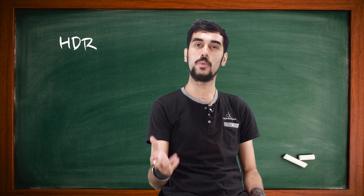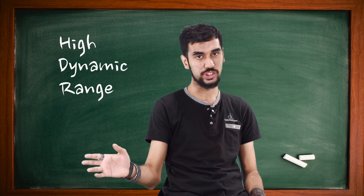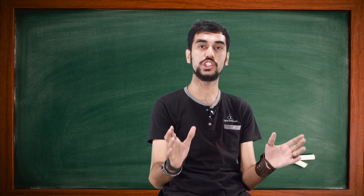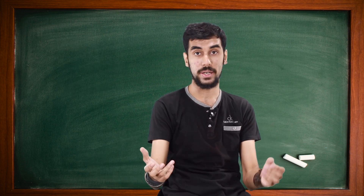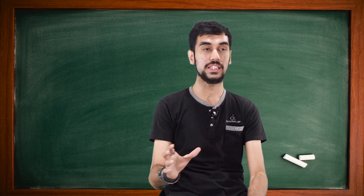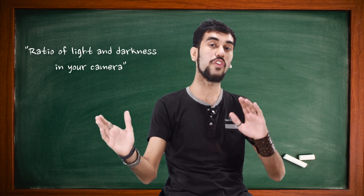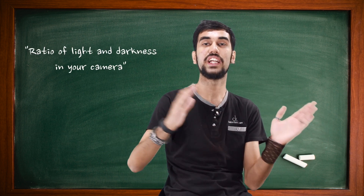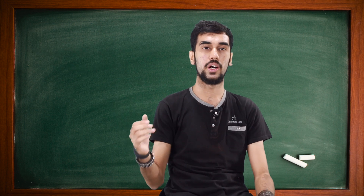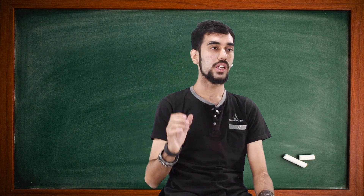HDR is the short form of High Dynamic Range. It adds a higher dynamic range to your smartphone camera. A dynamic range means the ratio of light and darkness in your camera or an image.